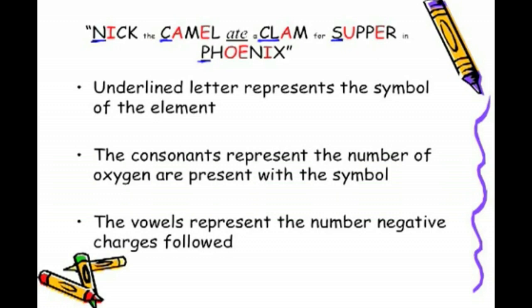The consonants, and those are designated with each word, and they are written in black. The consonants represent the number of oxygens that are present with the symbol that starts off each word. And the vowels represent the number of negative charges that follow. We're going to see that breakdown right now.